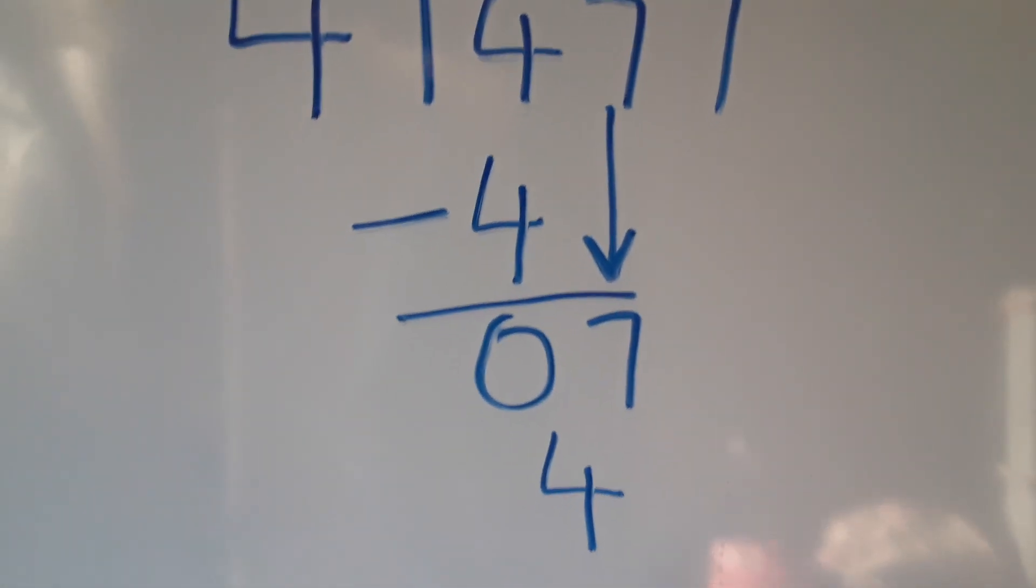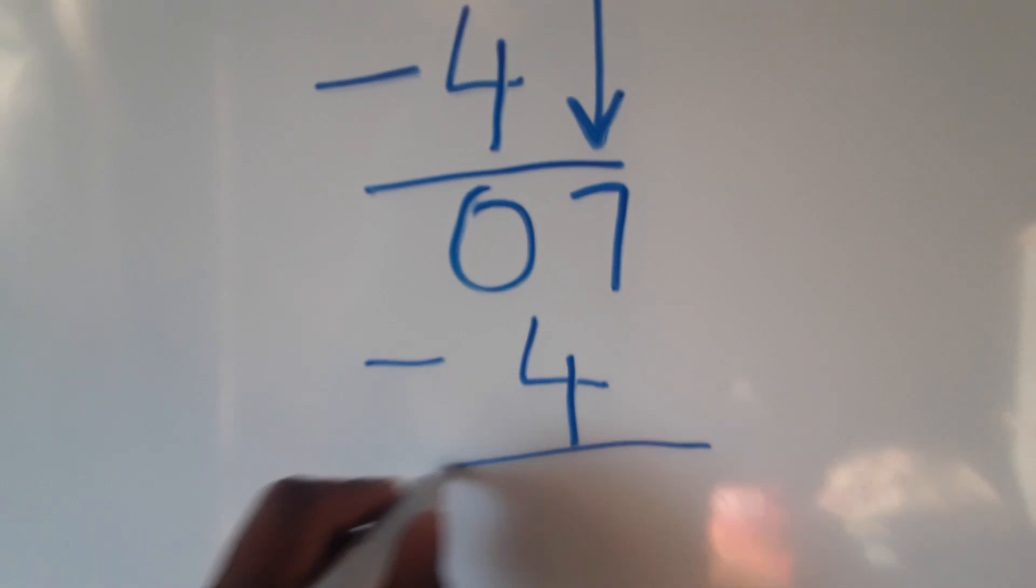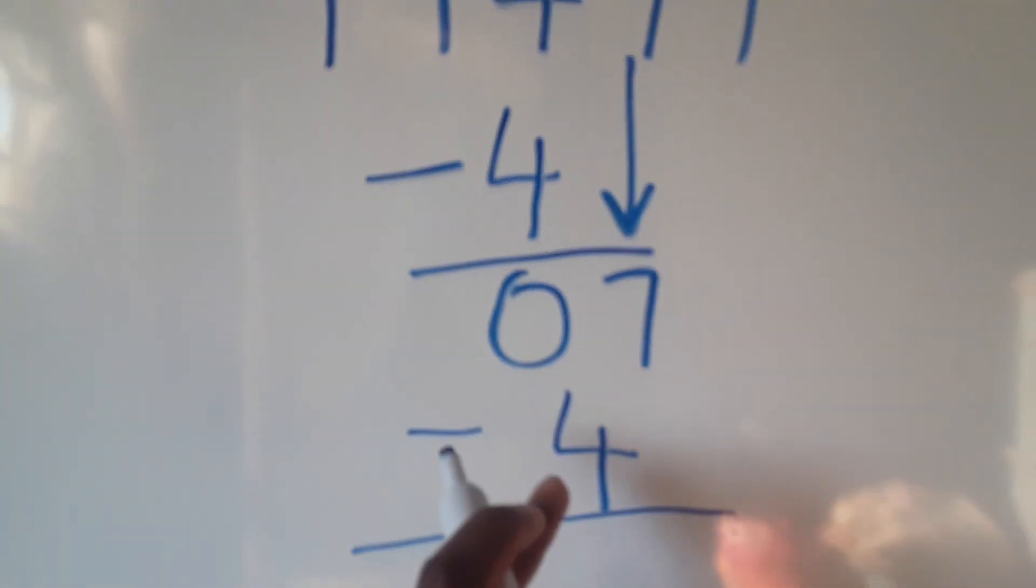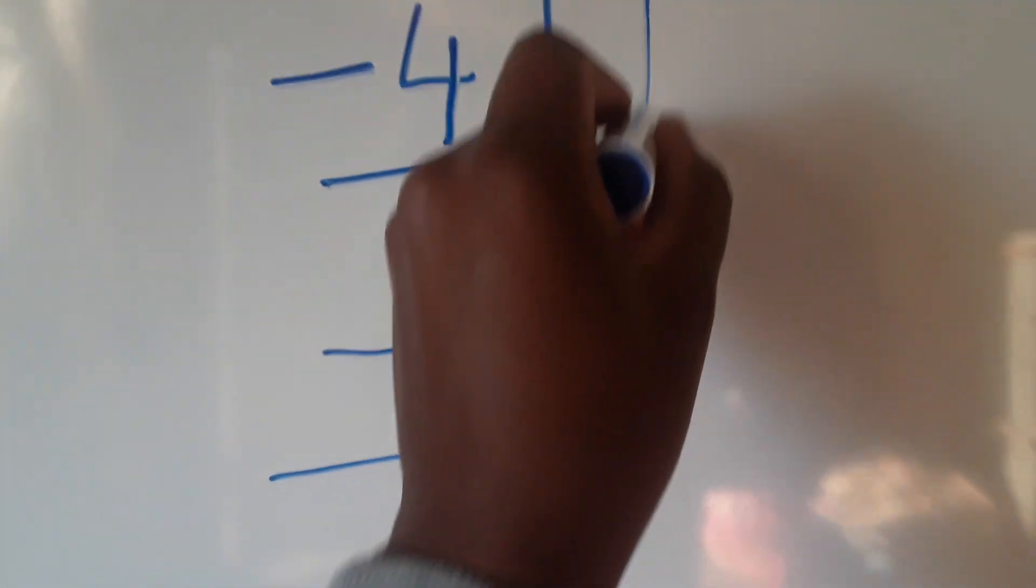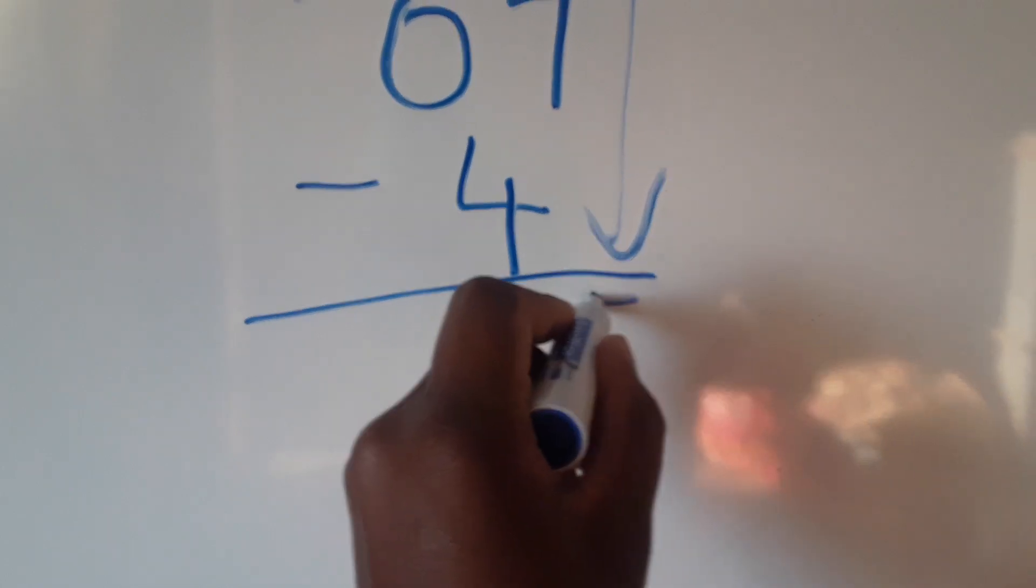give us 4 again. Then we're going to minus again. 7 minus 4, our answer is 3. Then we're going to drop the 7 all the way there.